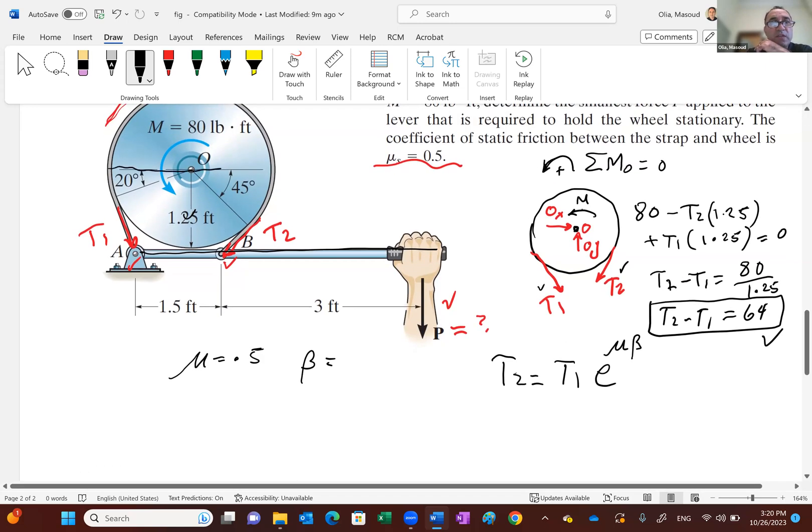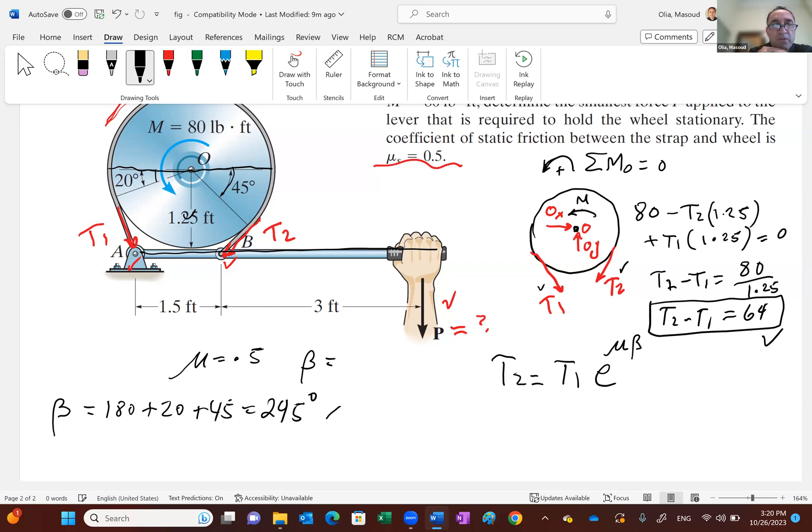So look at that. We know that we have 180 here, a 45 and a 20. So your beta is 180 plus 20 plus 45. So that's 245 degrees. But conversion of pi radian is 180 degrees. So you could do that conversion. We can actually put it in the equation. So T2 is equal to T1 e to the power 0.5 times beta in radians, which is 245 over 180 times pi.